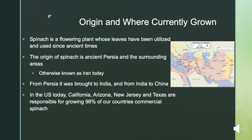In the U.S. today, California, Arizona, New Jersey, and Texas are responsible for growing 98% of our country's commercial spinach, with California being the biggest producer at 71% of our commercial spinach produced.